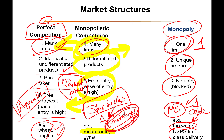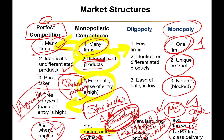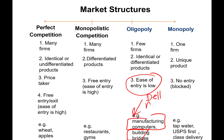Gyms are another example of monopolistic competition — all gyms aim for a healthy lifestyle, but a kettlebell weightlifting gym is totally different from a dance studio that does Zumba. Not all gyms are equal. We also have oligopoly, with few firms producing identical or differentiated products where ease of entry is low — entry is almost blocked. Examples include manufacturing computers and building bridges.